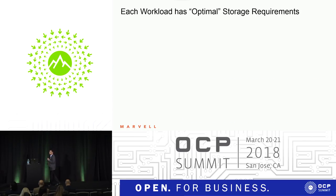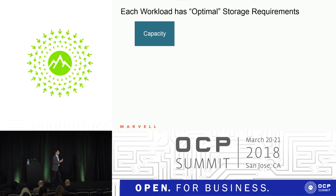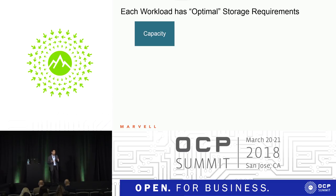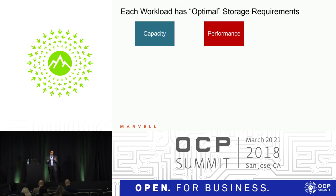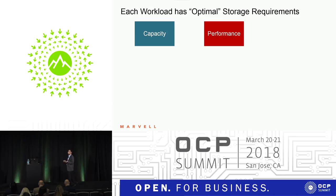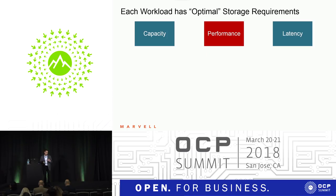Each of these workloads has optimal storage requirements. That could be capacity — some workloads need a lot, like a machine learning application where you want a big data set to analyze. Others just need to cache certain workloads where capacity will be lower. These differ across different applications. Similarly for performance: some are read-intensive, some are write-intensive, some are random, some are sequential. All these different workloads have differing requirements and not one piece of storage solves all of them. Then there's the latency side — not one storage solution addresses every workload optimally.